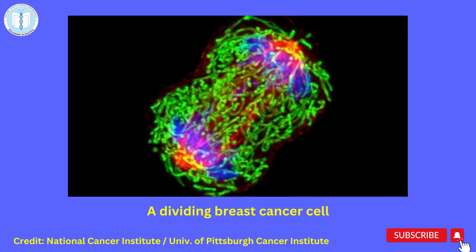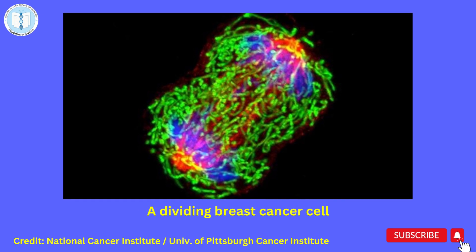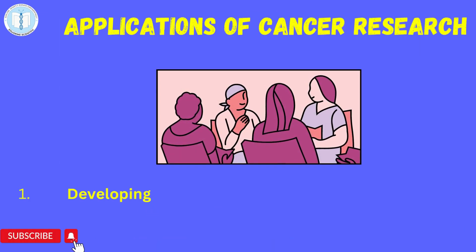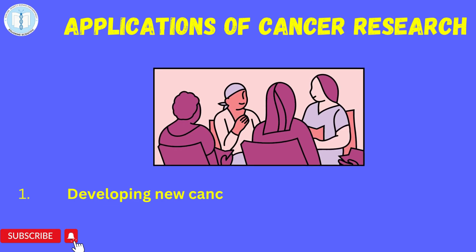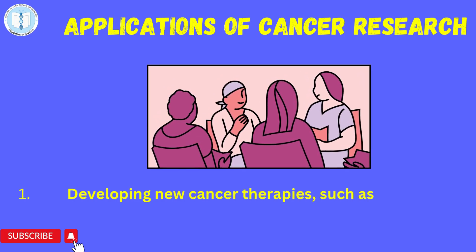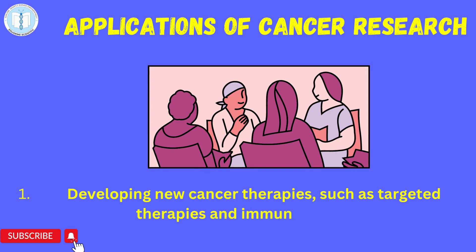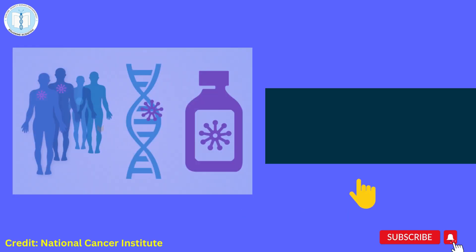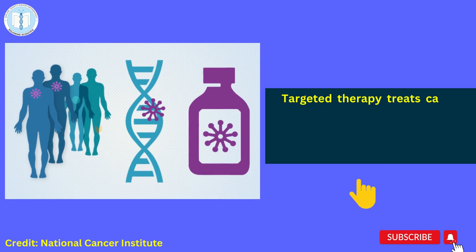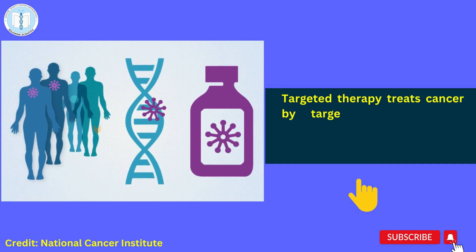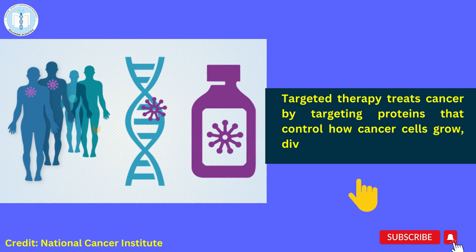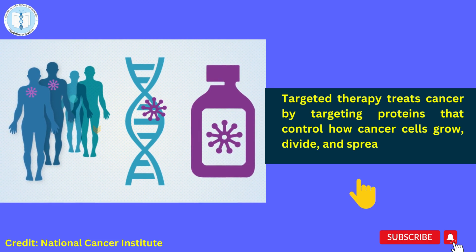Here are examples of the applications of cancer research. First is developing new cancer therapies such as targeted therapies and immunotherapies. Targeted therapy is the type of cancer treatment that targets proteins that control how cancer cells grow, divide and spread.